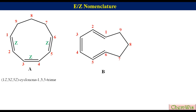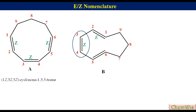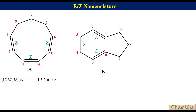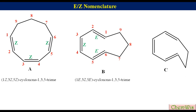For compound B, with its numbering as shown: the C1-C2 double bond has E configuration because higher priority groups are on opposite sides. The C3-C4 double bond has Z configuration because higher priority groups are on the same side. The C5-C6 double bond has E configuration. So the name of this triene is (1E,3Z,5E)-cyclonona-1,3,5-triene. For compound C, we can define the configurations of the three alkenes as Z, Z and E respectively, giving the name (1Z,3Z,5E)-cycloocta-1,3,5-triene.